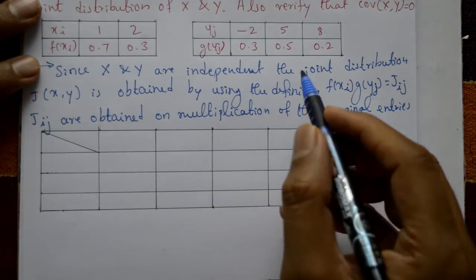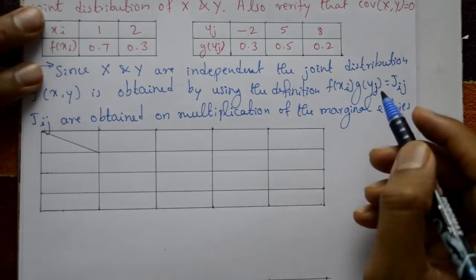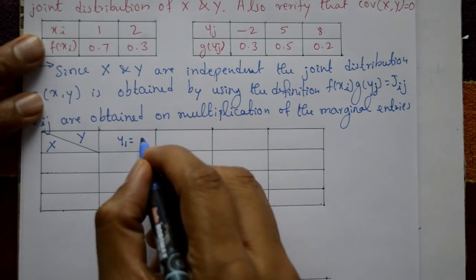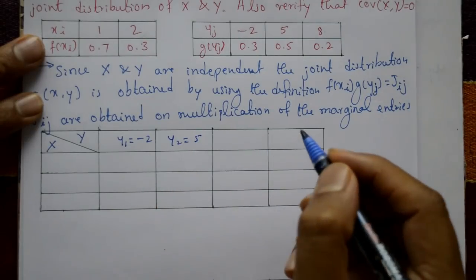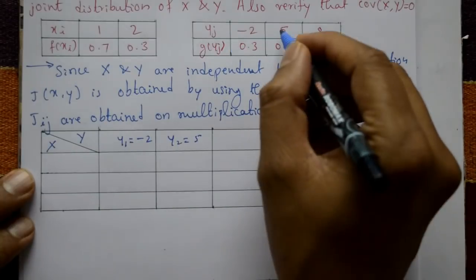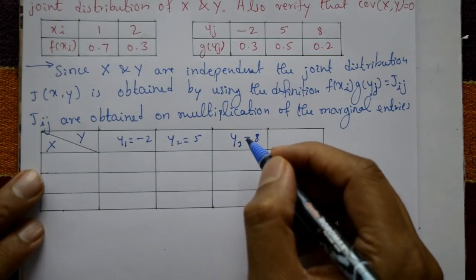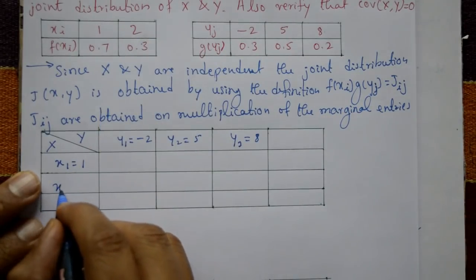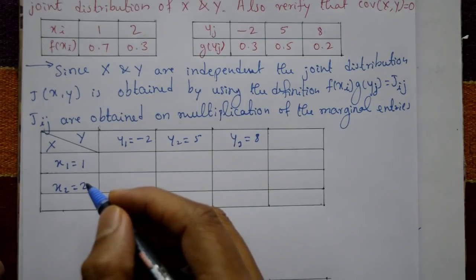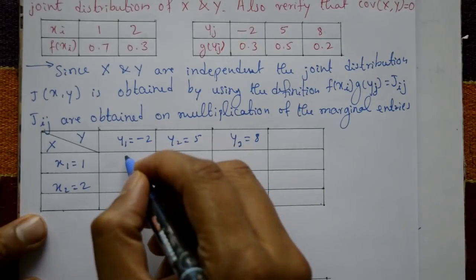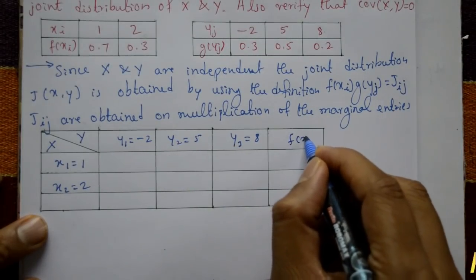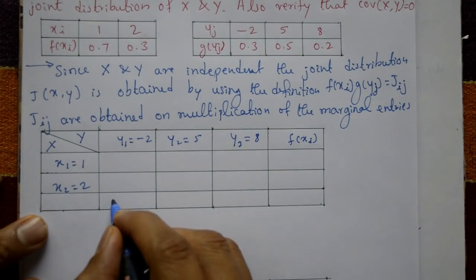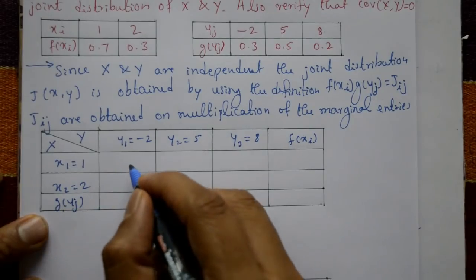Using this formula — because X and Y are independent — we set up the joint distribution table. The Y values are y1 = minus 2, y2 = 5, and y3 = 8. The X values are x1 = 1 and x2 = 2. The column-wise marginals give g(yj) and the row-wise marginals give f(xi), with additions done row-wise and column-wise respectively.